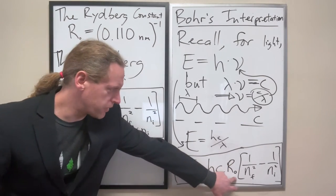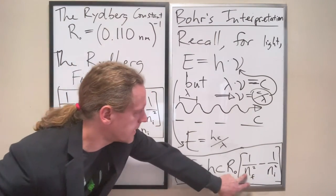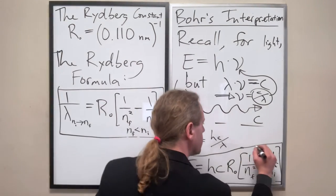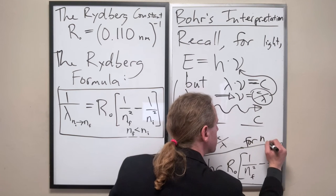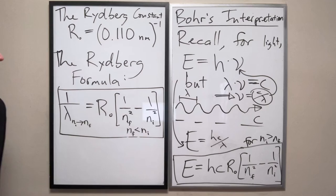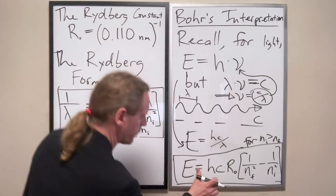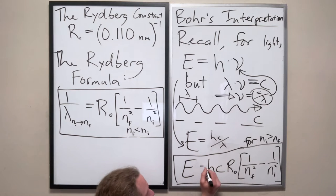And again, we'll just make the, we'll establish the fact that Ni must be greater than NF. And I will add one more thing here. This is E sub I to F.